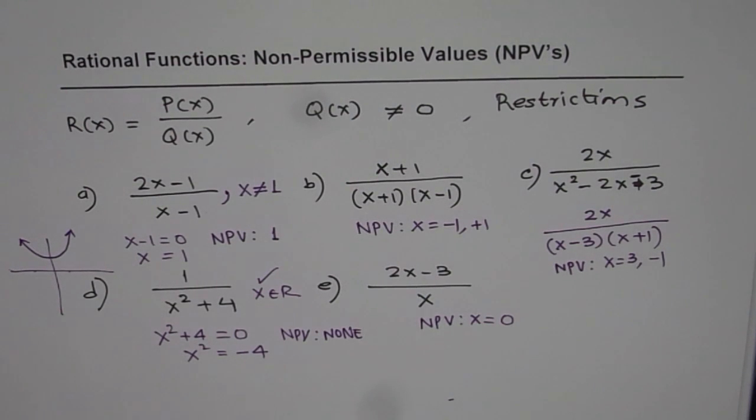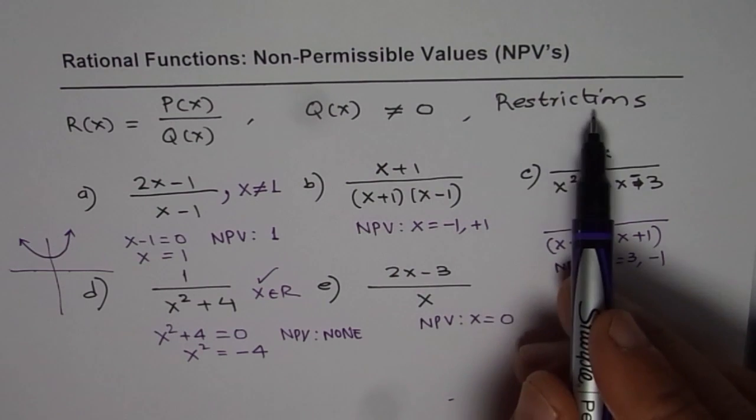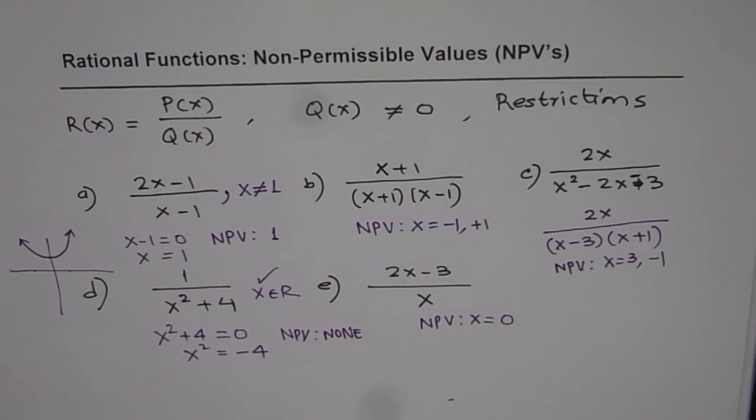I hope with this you have a fairly good idea of restrictions on rational functions or when we talk about non-permissible values, NPVs. In my videos I will be using the word restrictions most of the time. Whenever we have a rational function, we may have restrictions or some values which x cannot take. Those are non-permissible values, NPVs. Remember that when we solve rational functions. I hope that helps. Thank you.